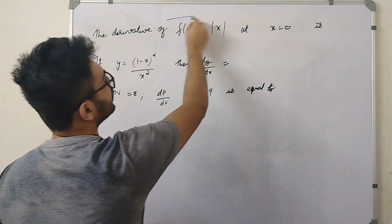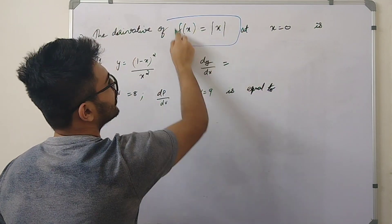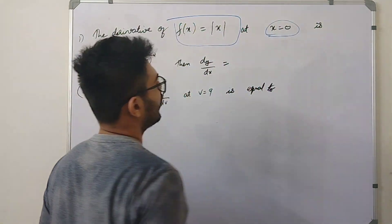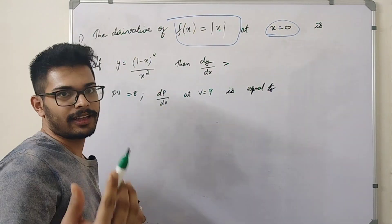We have a question: the derivative of f of x equal to mod x at x equal to 0. The derivative of mod x — what is the answer?